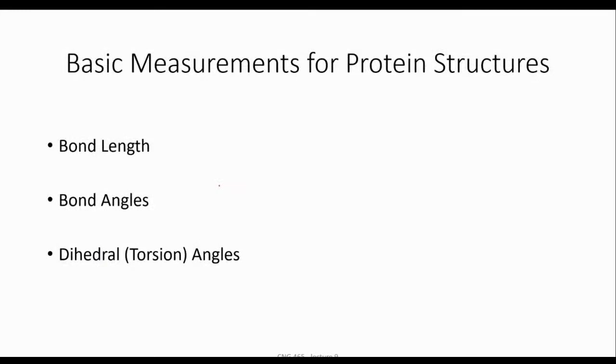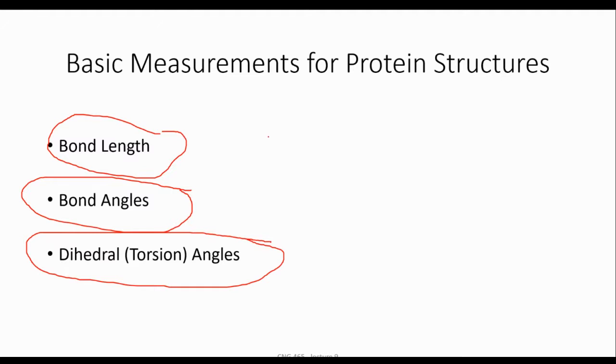How to measure these protein structures? In bioinformatics, at the end we are interested to compare these structures together or find similarities, like what we have done with alignment. We can define such things also for protein structures and we will talk about it next week in details. But we should have some basic measurements for that. One of them is bond length. The other one is bond angles. And the last one is torsion angles.